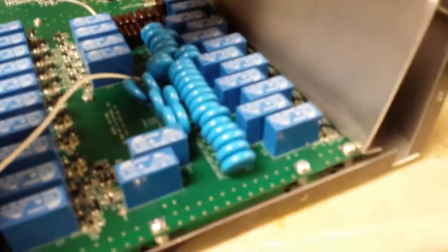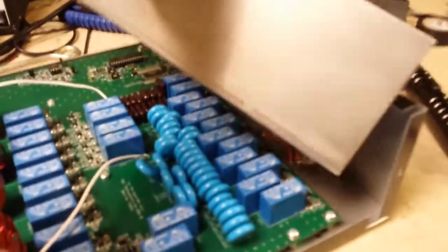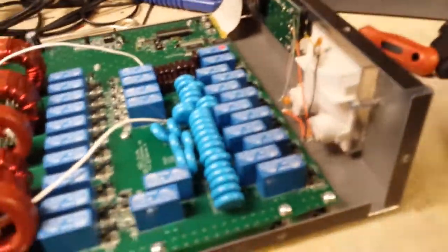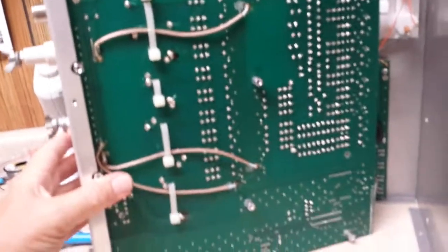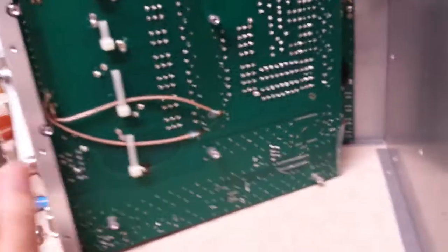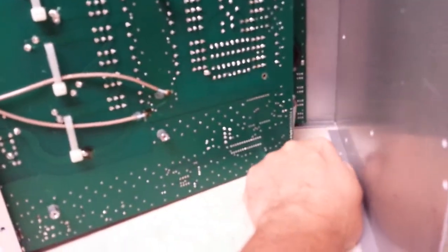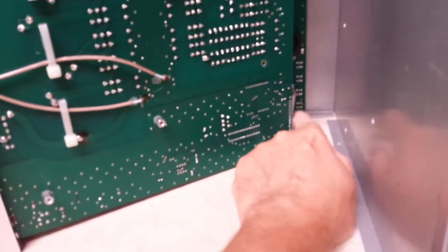Two of the bolts hold this shield here in. Just take those two out, get rid of the shield, and I've already taken the bolts out of the bottom. As you can see here, you can swing the board out and it's still attached by the multi-conductor flat ribbon cable.